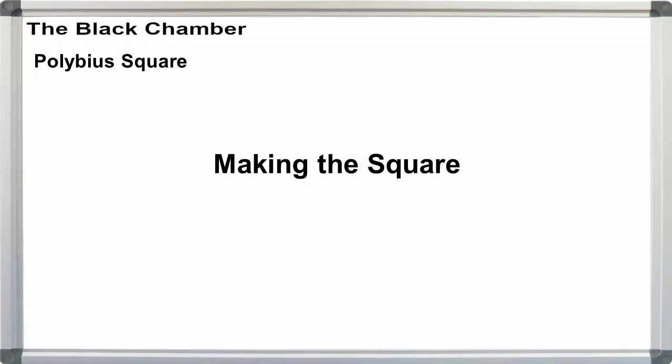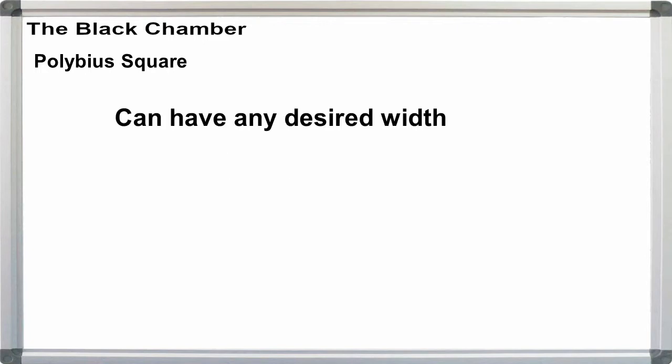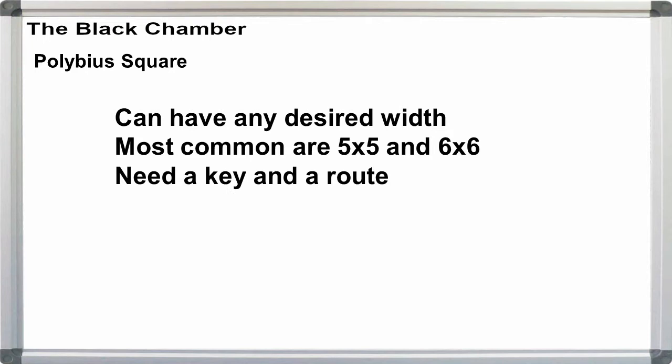Making the square. The Polybius square can be of various widths, but the most common are 5x5 and 6x6. We'll start with the 5x5. To create the square, we need a key and a route.